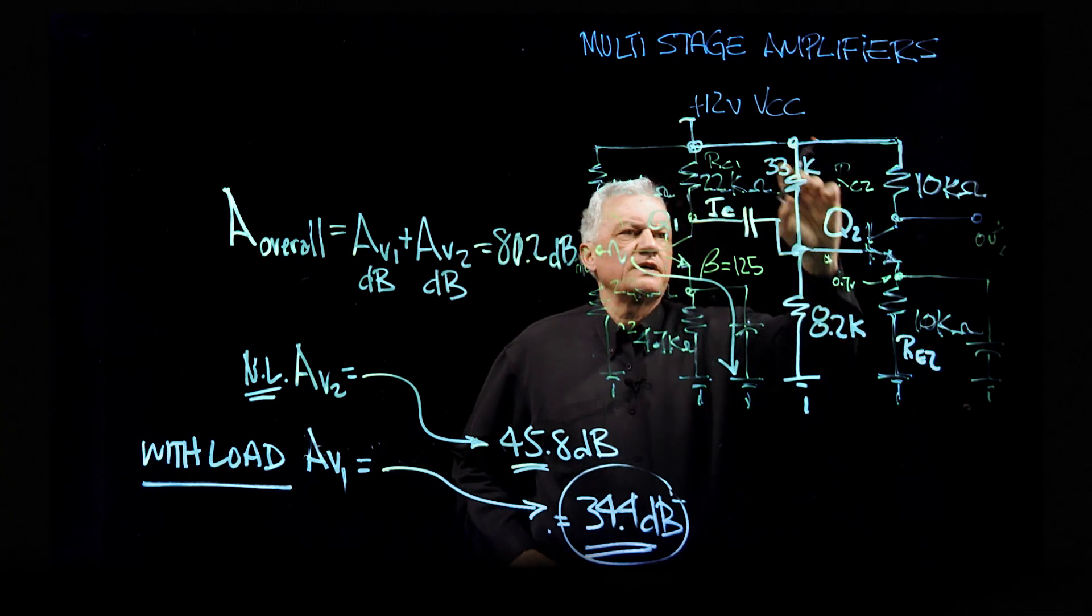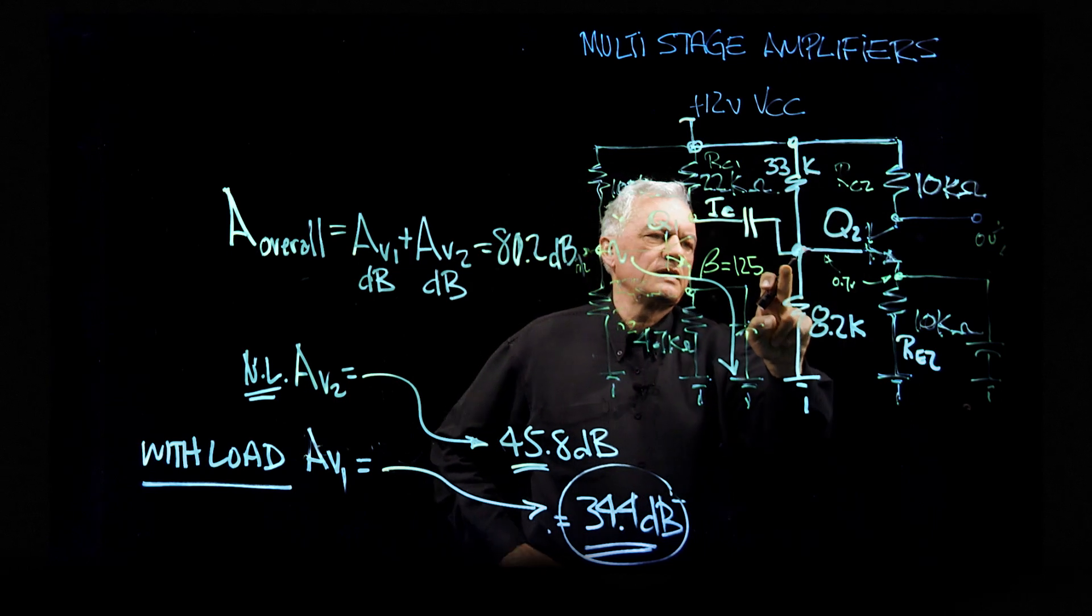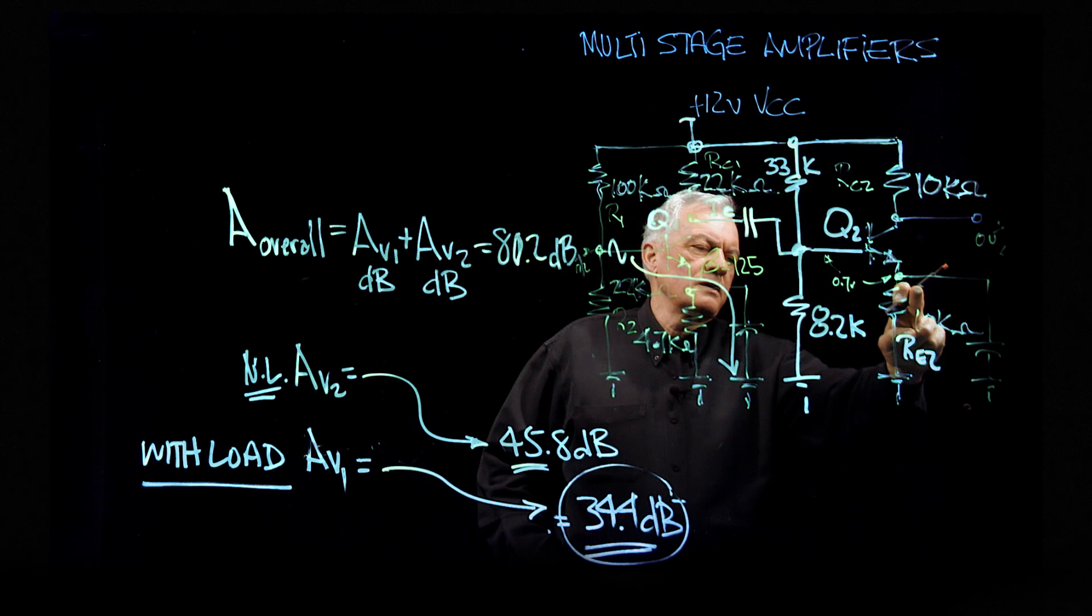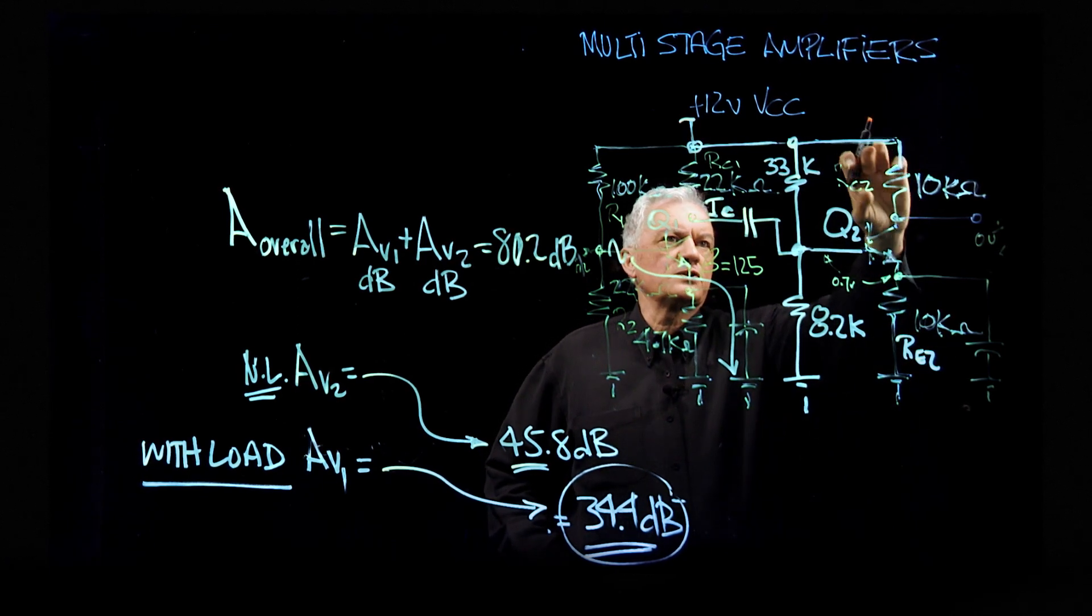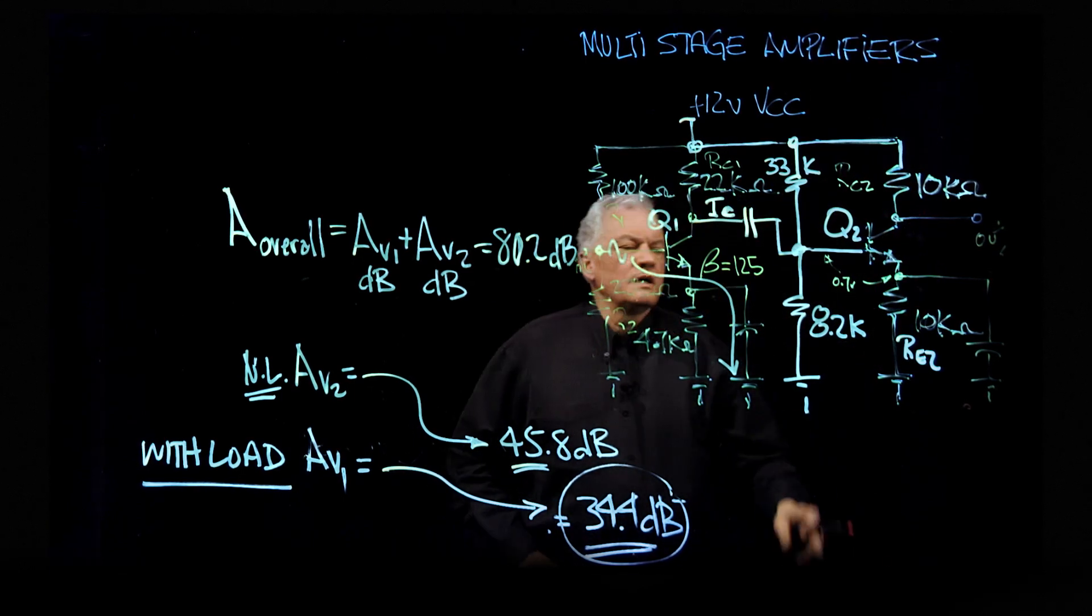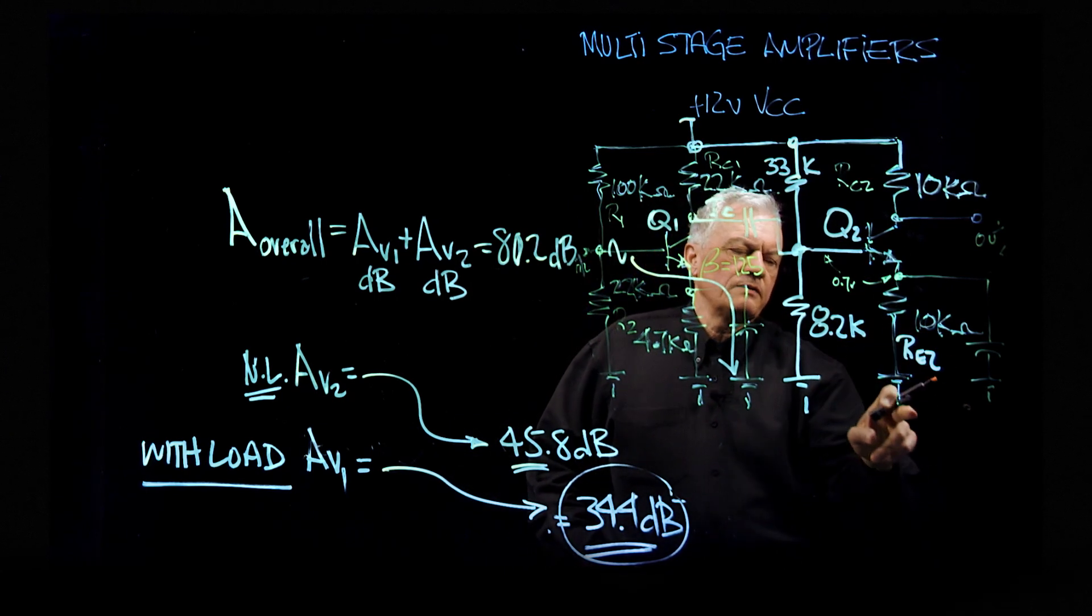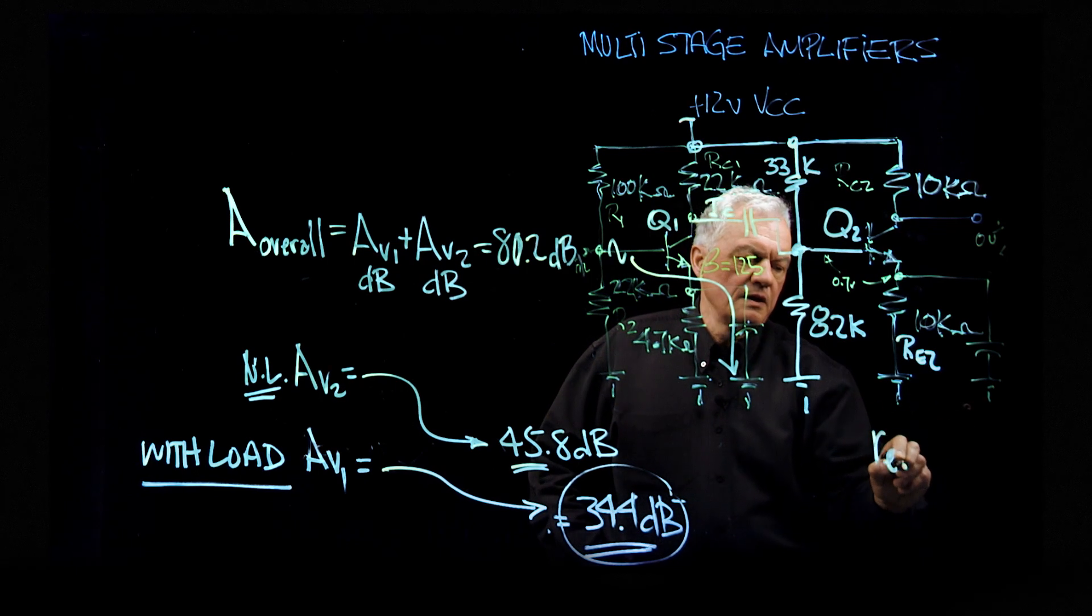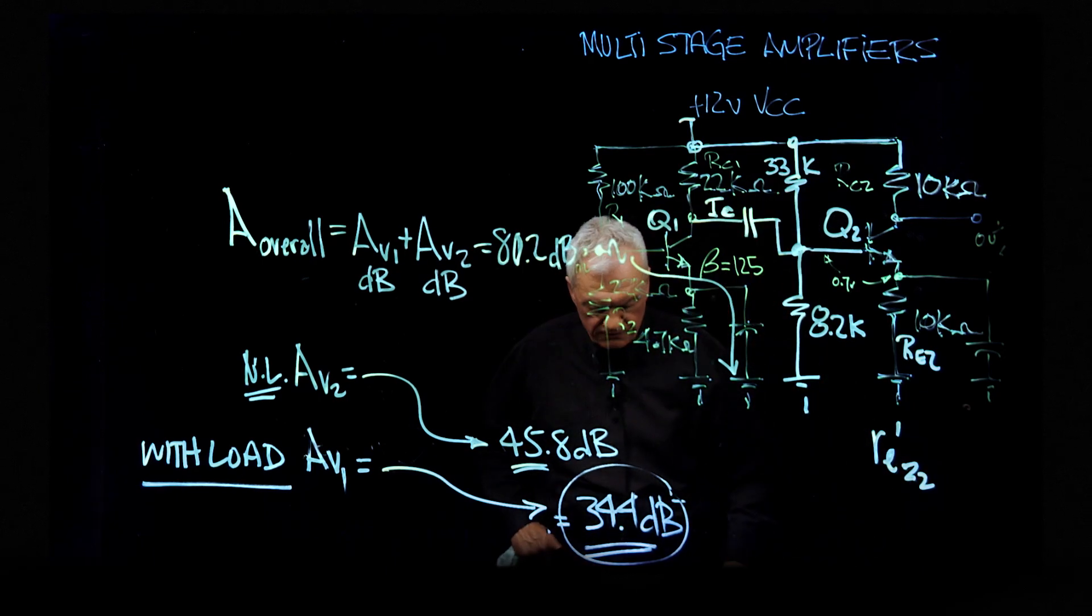We have basically 8.2K over 33K plus 8.2K times 12 volts to come up with a voltage at this point. We drop 0.7, we get voltage at the emitter. This resistor gets us a current. This current through this resistor is a voltage drop. Subtract that voltage drop from 12 volts, you've got the voltage here. Take this current, the emitter current that you've calculated, and then divide it into 25 millivolts to come up with your RE2 prime. It's going to be a new one, so I'm going to call it second second.